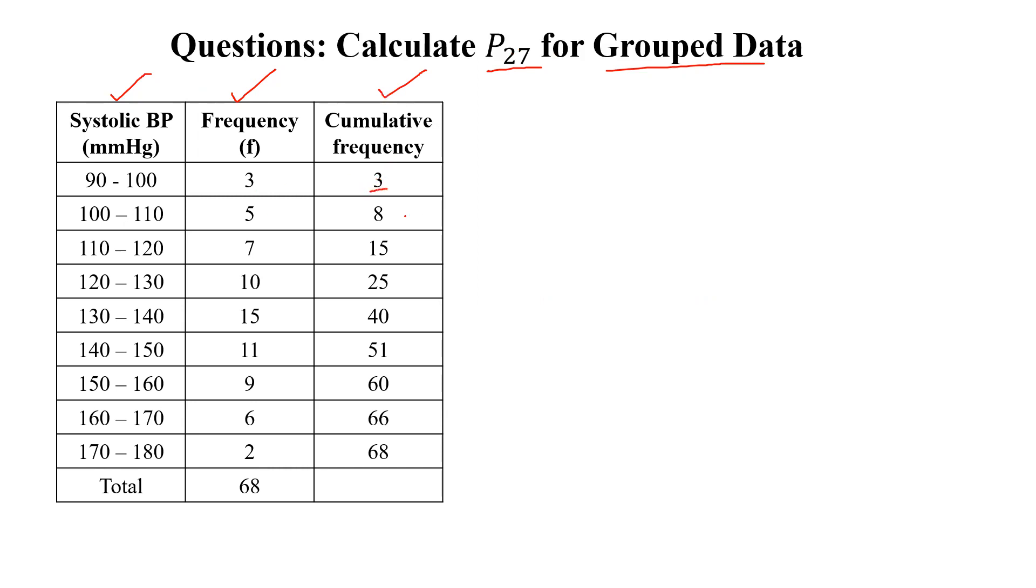Then 3 plus 5 is 8, then 8 plus 7 is equal to 15, 15 plus 10 is 25, 25 plus 15 is 40, then 40 plus 11 is 51, then 51 plus 9 is 60, 60 plus 6 is 66, 66 plus 2 is 68. And 68, this last value must be equal to total sum of total frequency column.